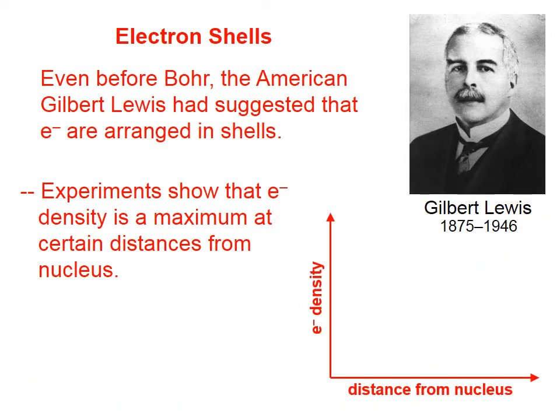If we look at this graph with electron density on the vertical axis and distance from the nucleus on the horizontal axis, if we look at data for helium, what we'll find is that very close to the nucleus, there is very little probability of finding an electron.